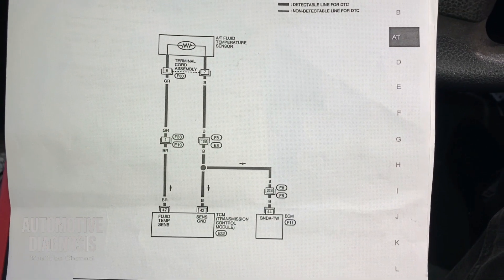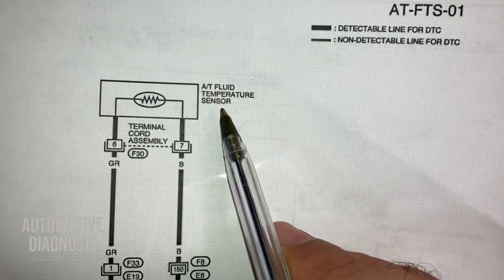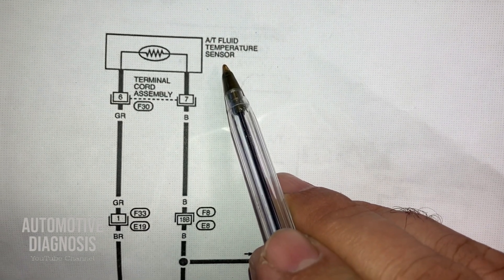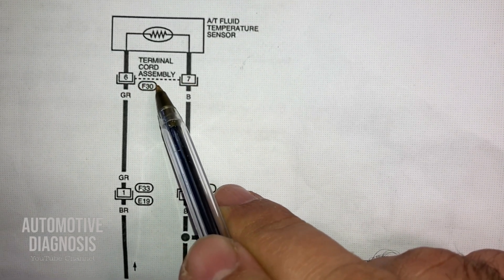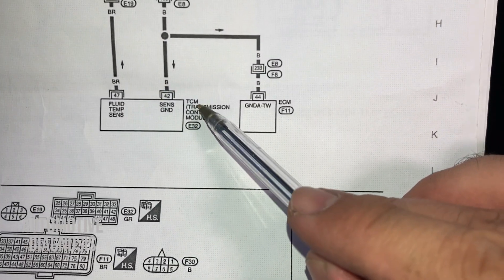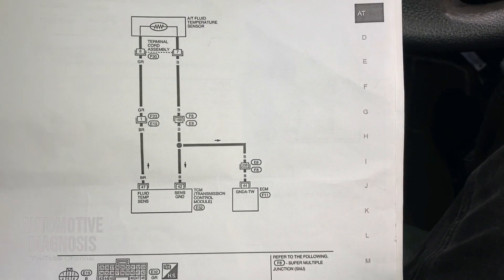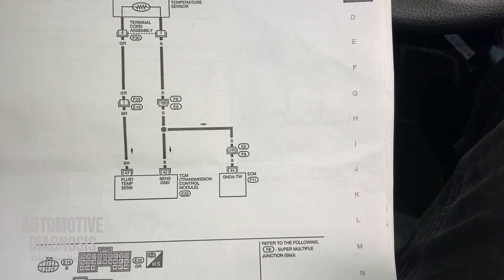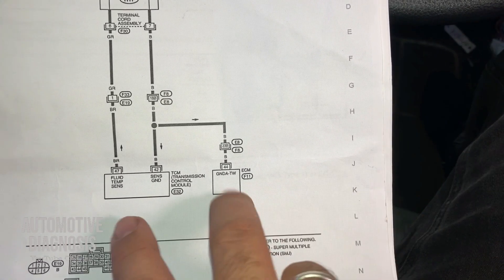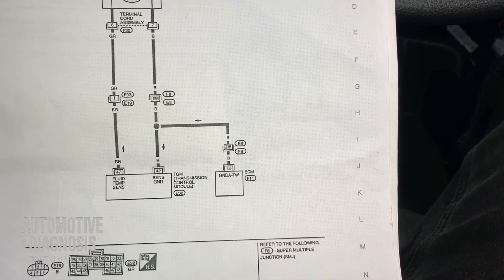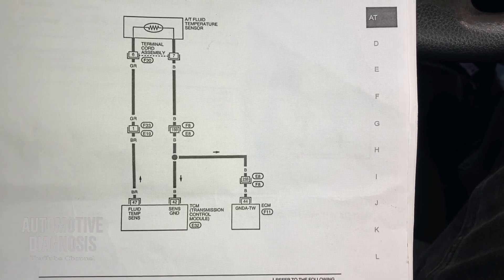Here is the wiring diagram that I need to inspect the car. As you can see, this is the temperature sensor which is inside the transmission, and this is the connector on the transmission. I have the TCM transmission control module right there, and this is the ECM. On this specific car I have a separate control module for transmission and another one for ECM.